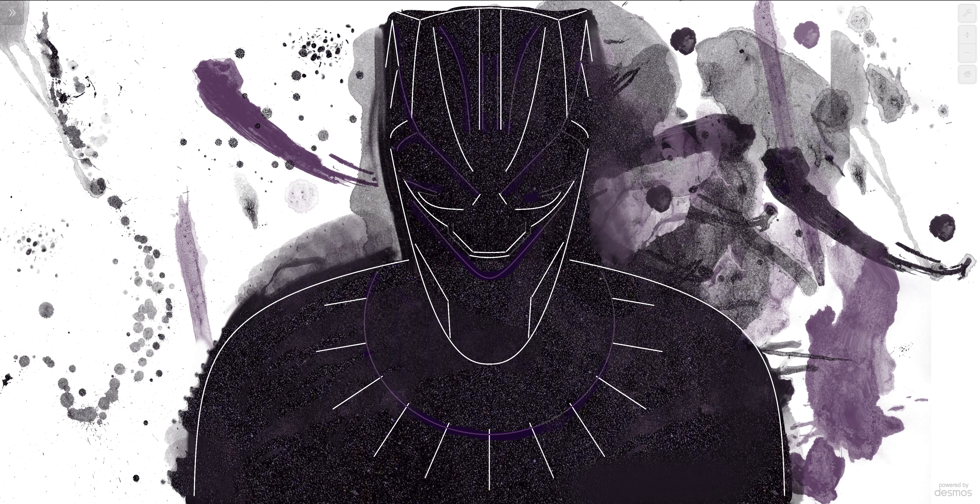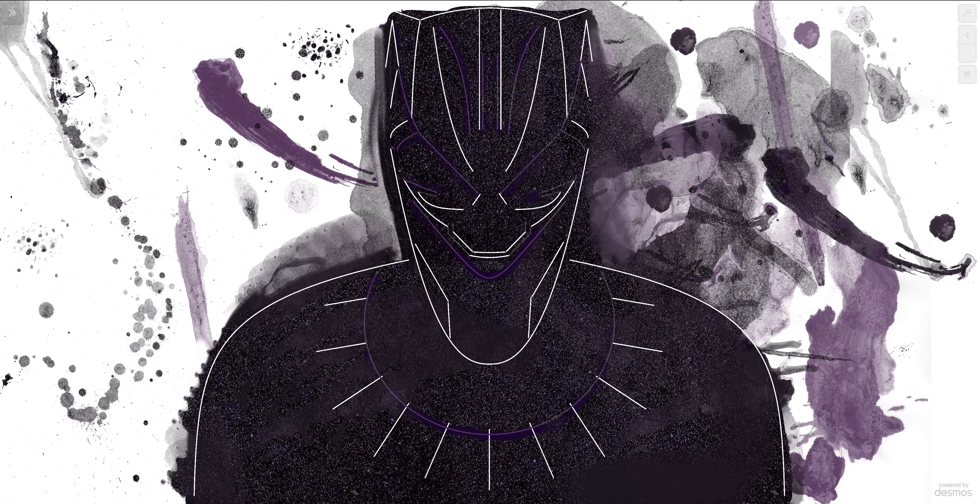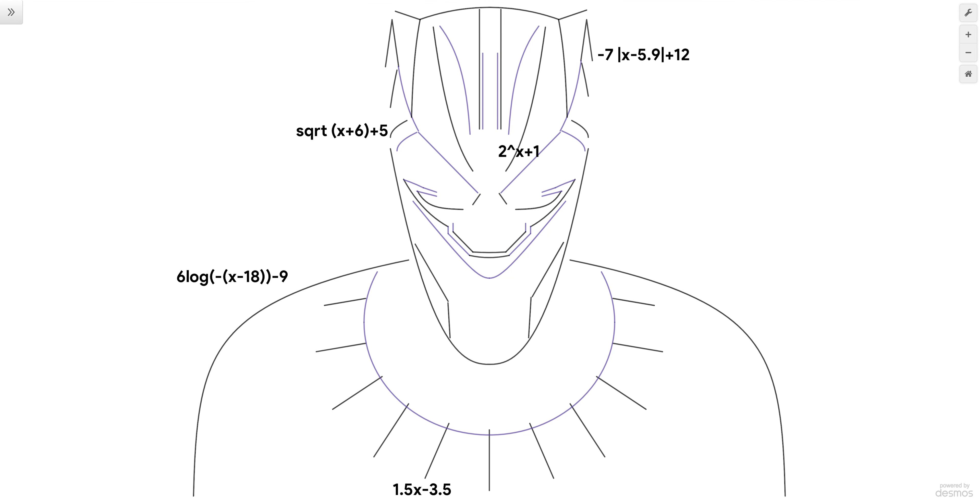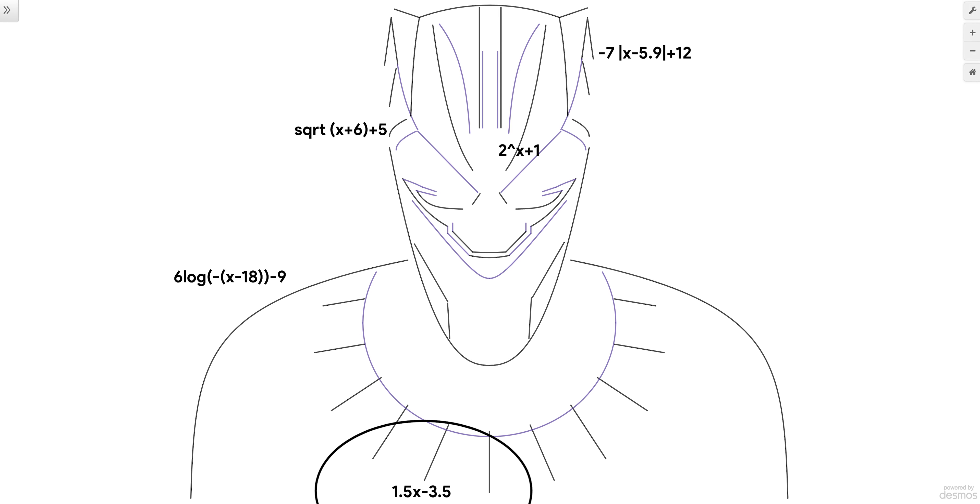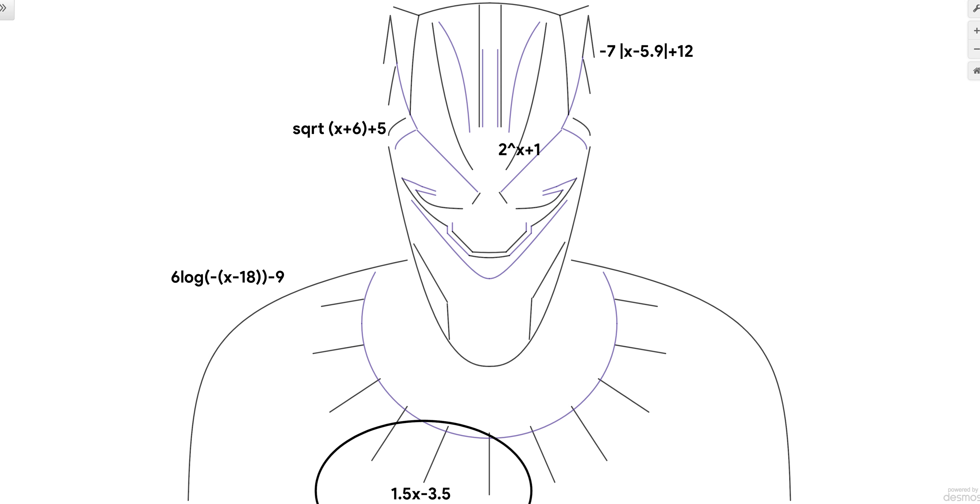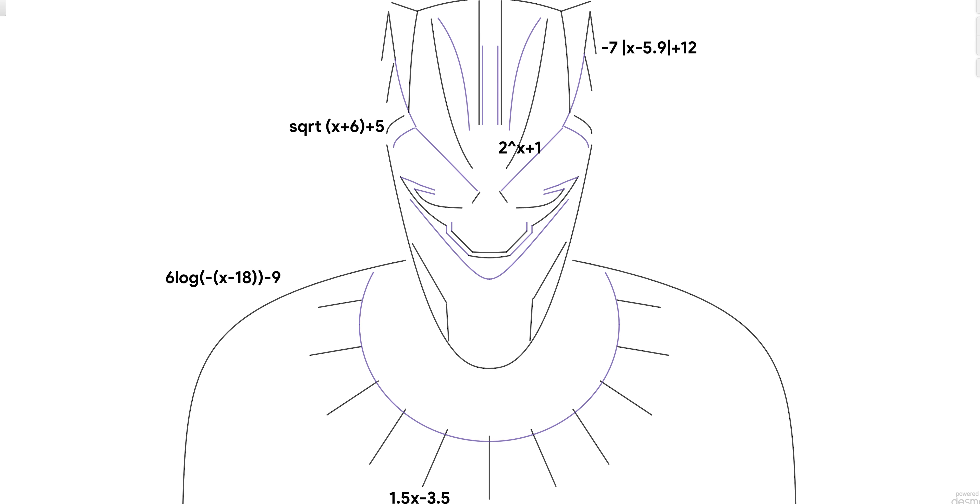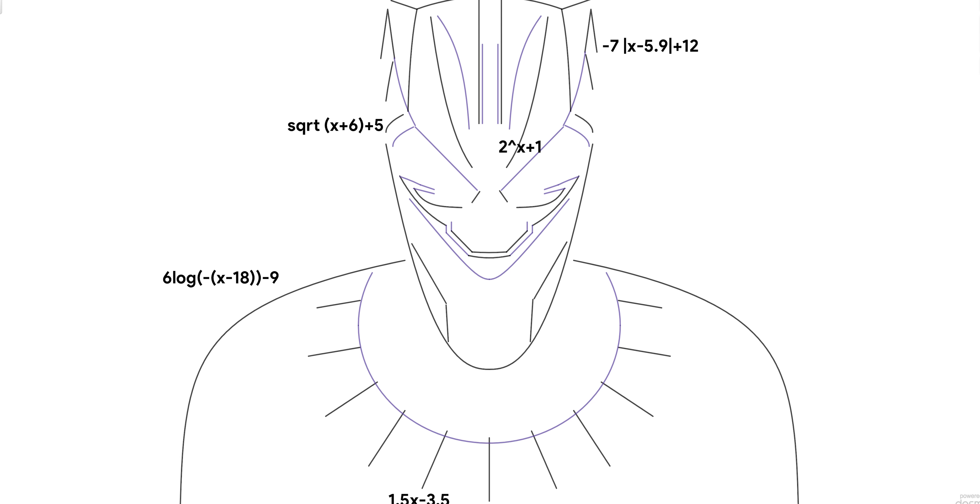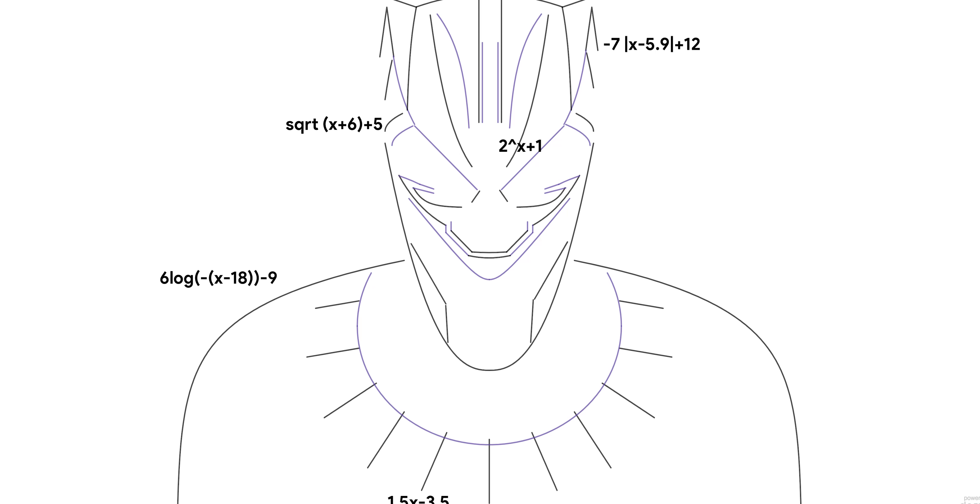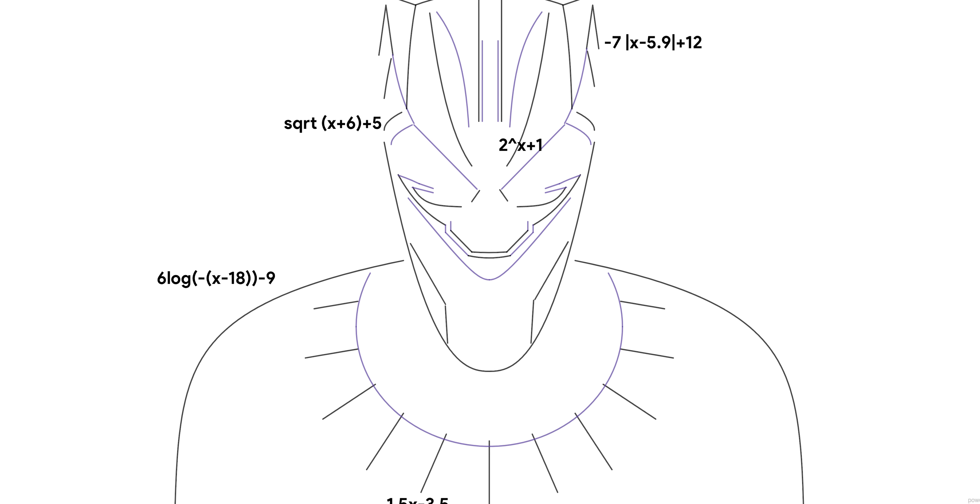Now that all the bulky stuff is out of the way, I can show what this means for my beautiful graph. First, we'll start with 1.5x minus 3.5. This is a part of the necklace of the Black Panther suit. What I did to get the result I wanted was make the slope 1.5. Then I moved the graph down 3.5, aka made the y-intercept 3.5. Pretty cool, right?